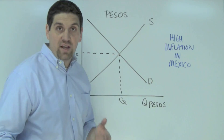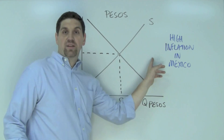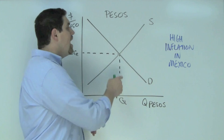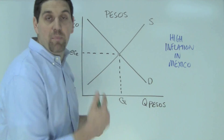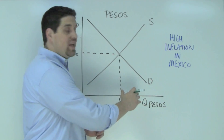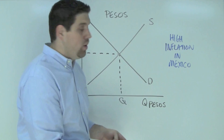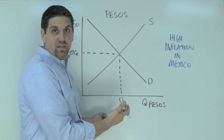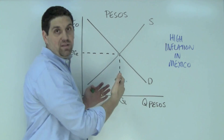The scenario the question gives us is that there's higher inflation in Mexico, and it asks what happens to the demand and what happens to the supply of Mexican pesos. The demand for Mexican pesos is not done by people living in Mexico — this is demand from other countries. But people in Mexico supply pesos.